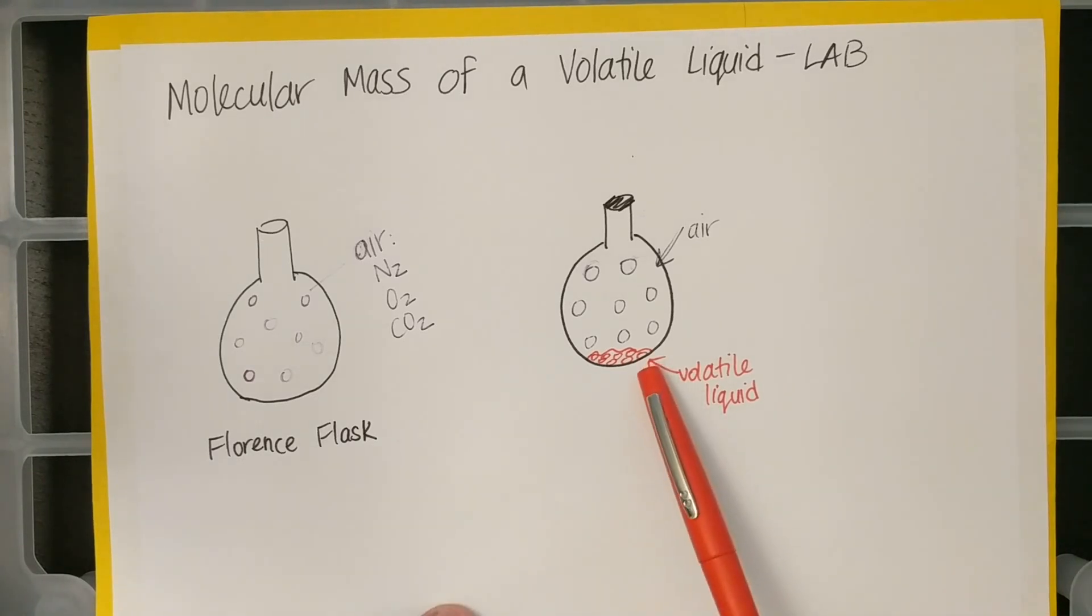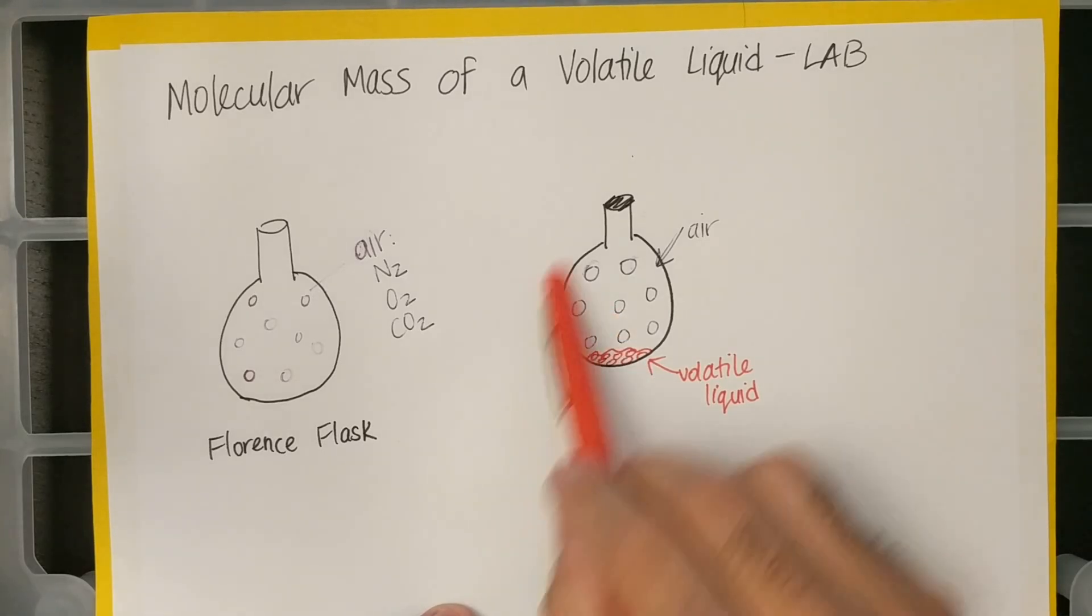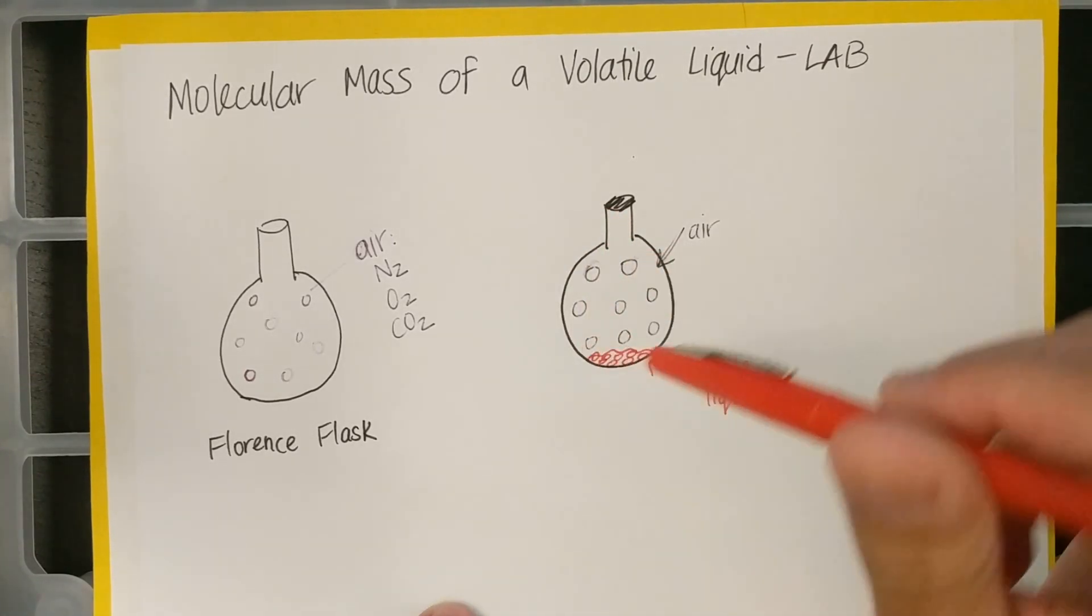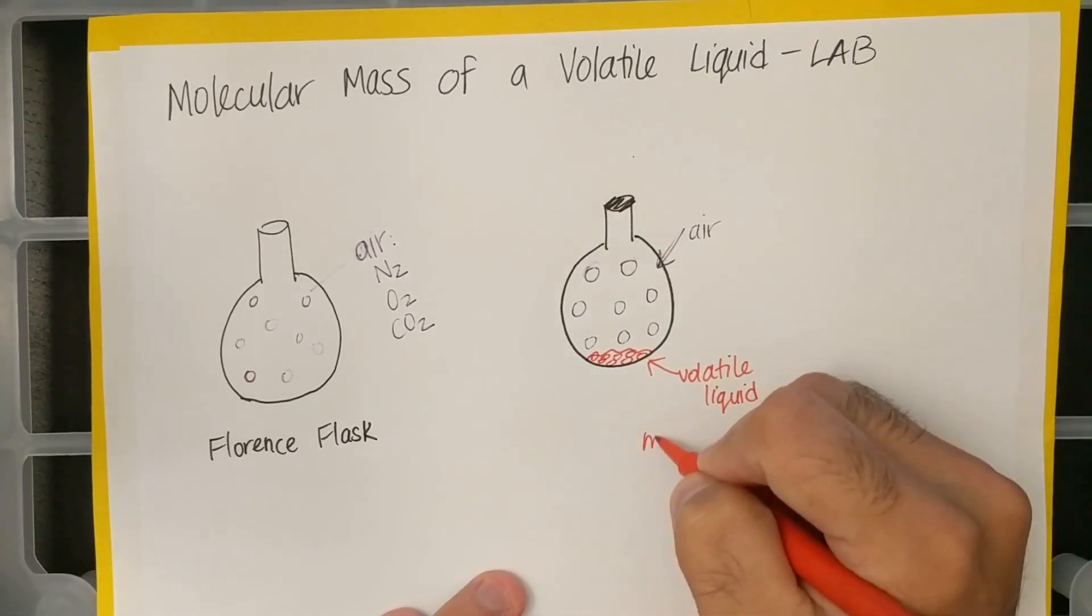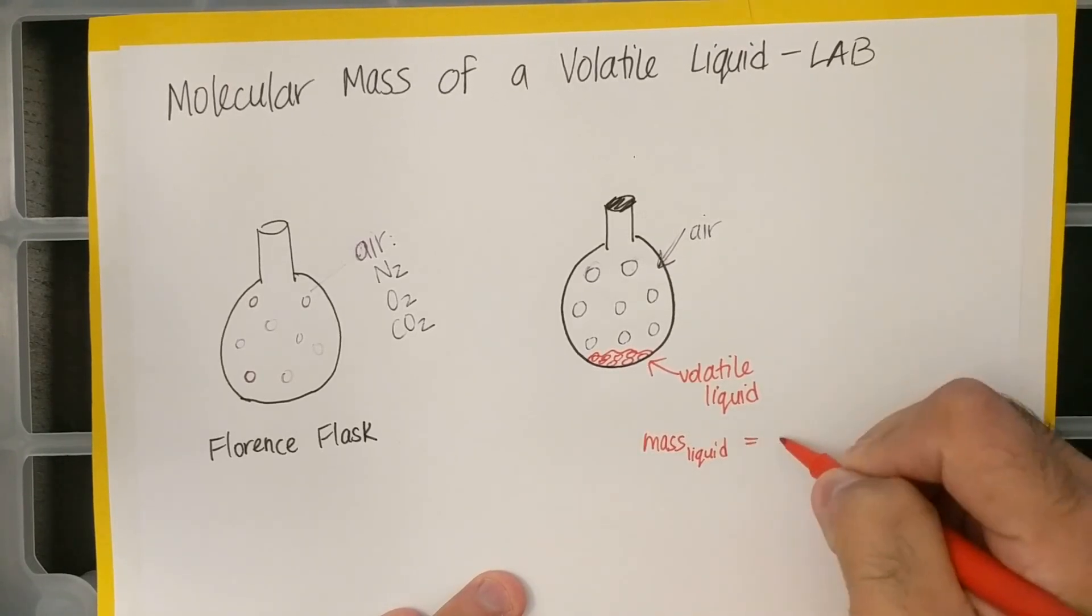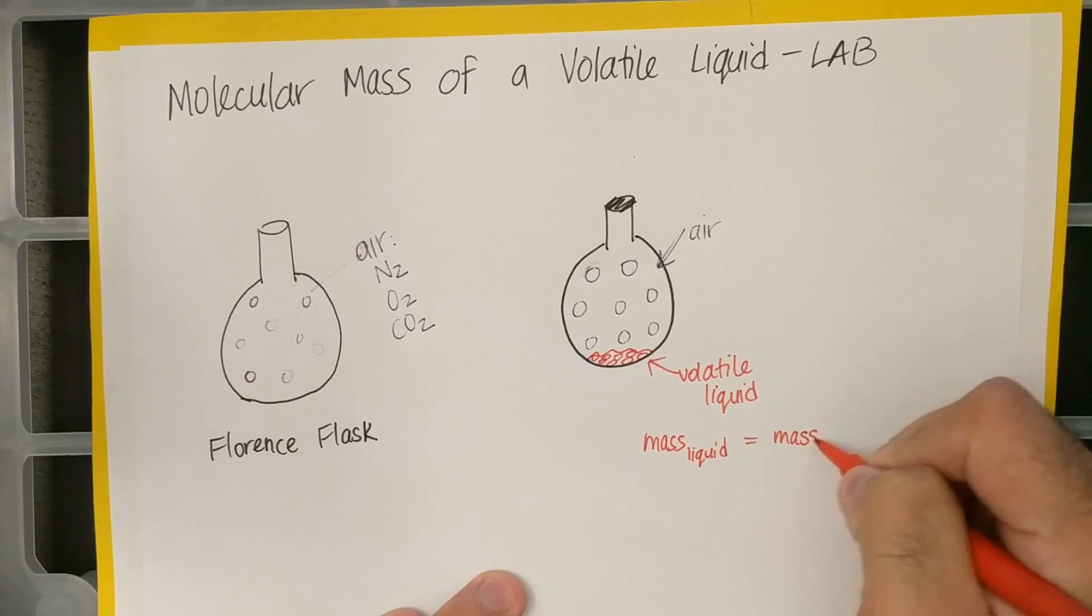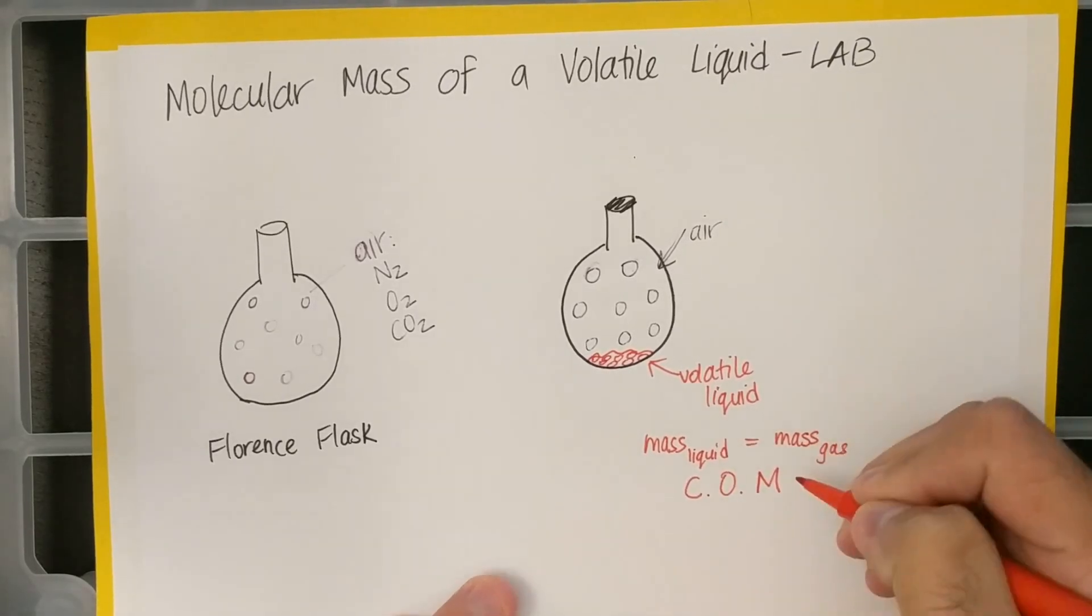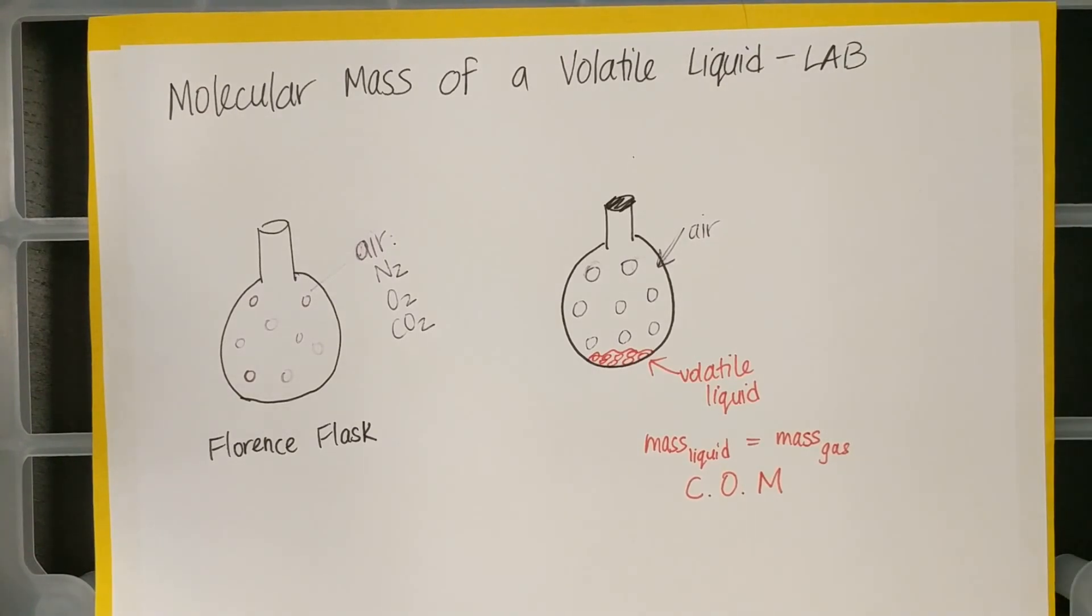I propose that conservation of matter says that if this volatile liquid begins to vaporize, go into the gas phase, that it should take up the space of the container. And the mass of this liquid, so mass of the liquid, we did say it should be equal to the mass of the gas, and that's because of conservation of matter.